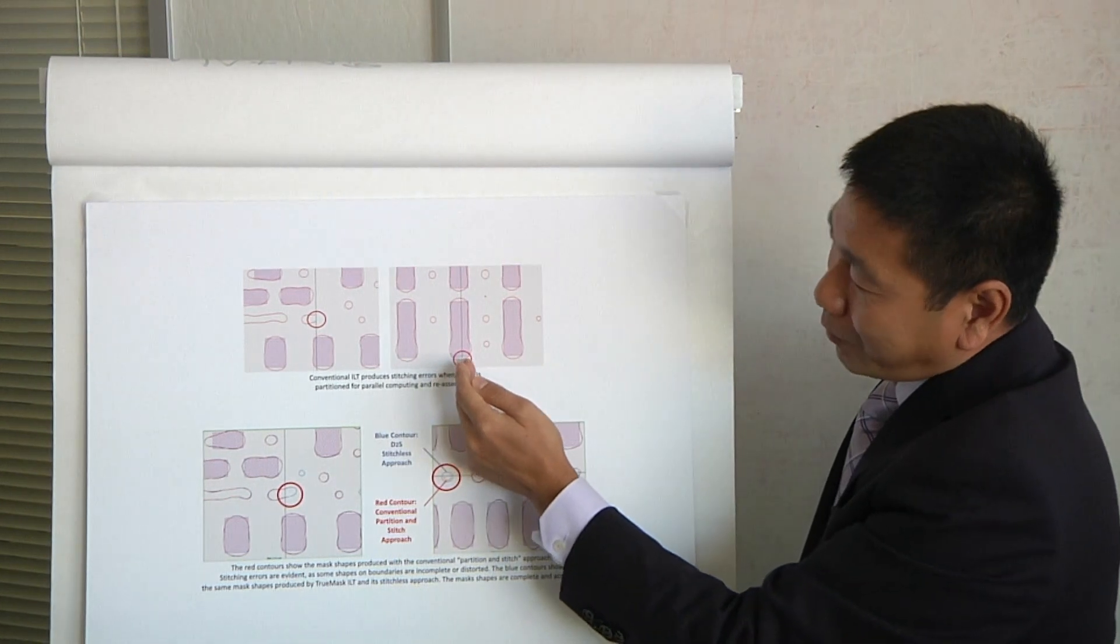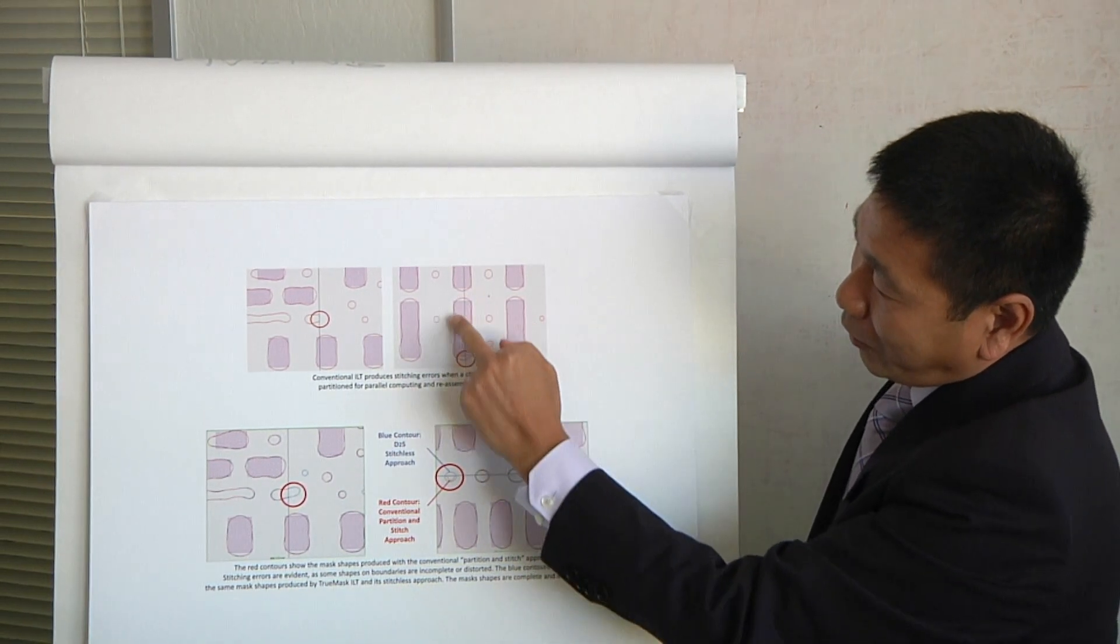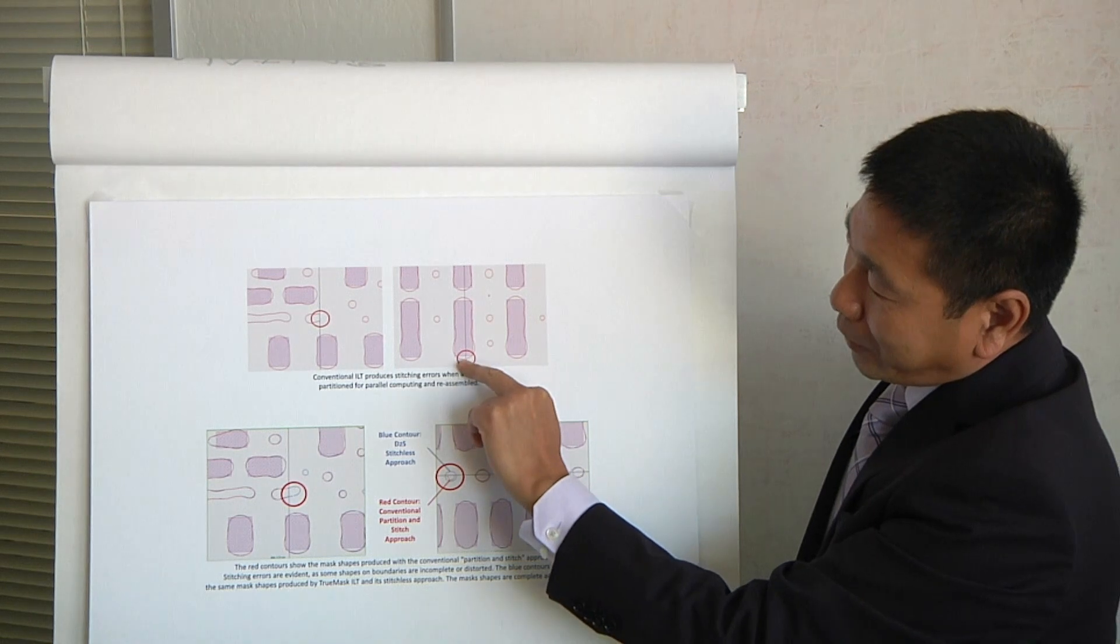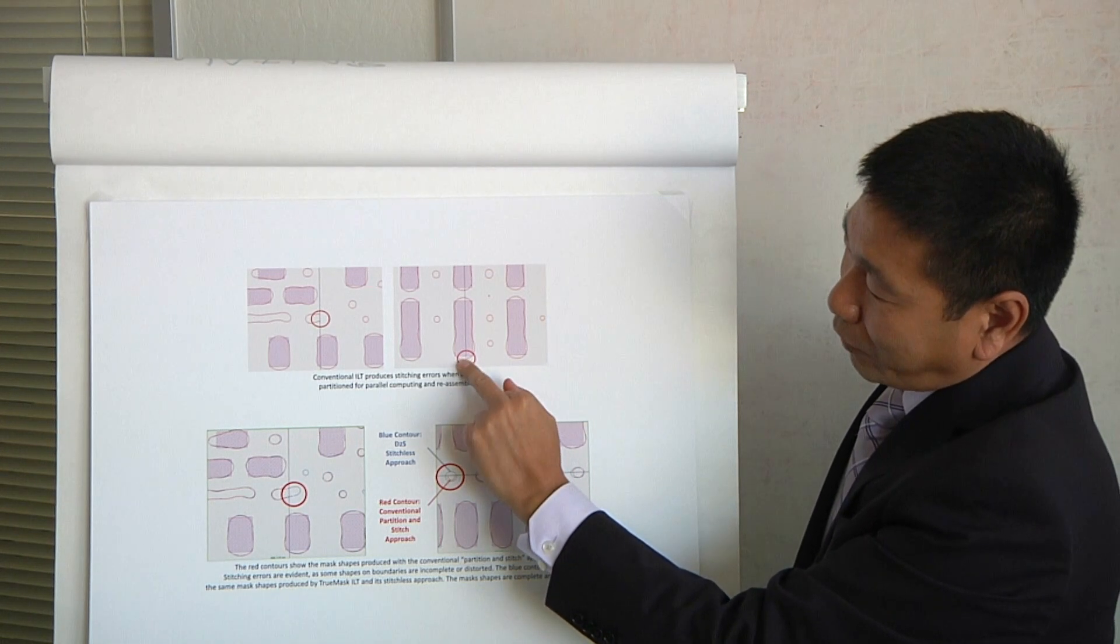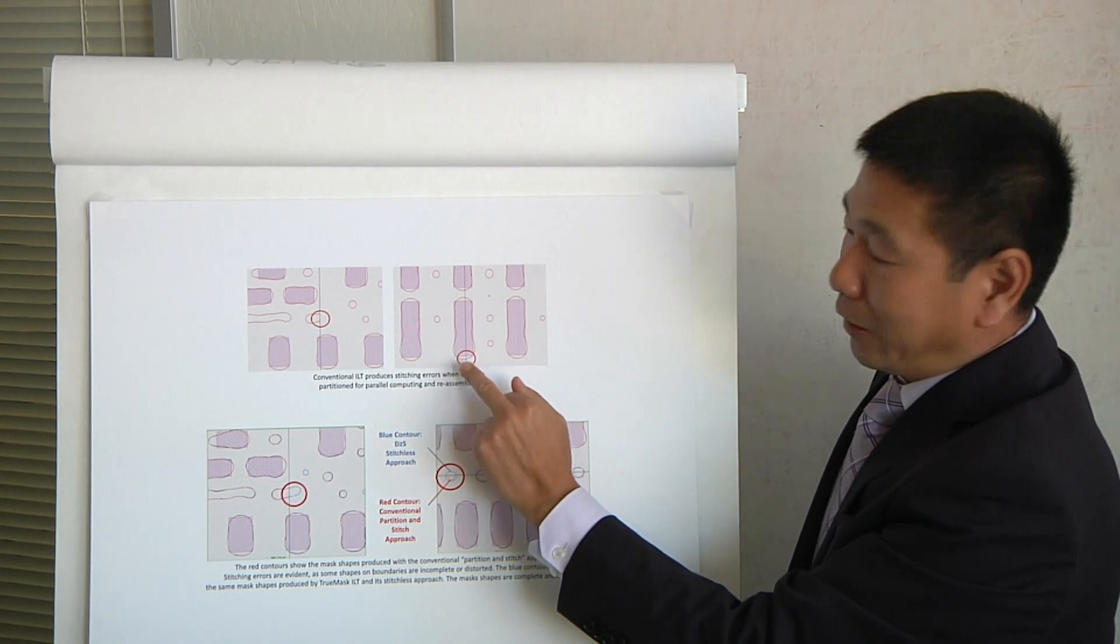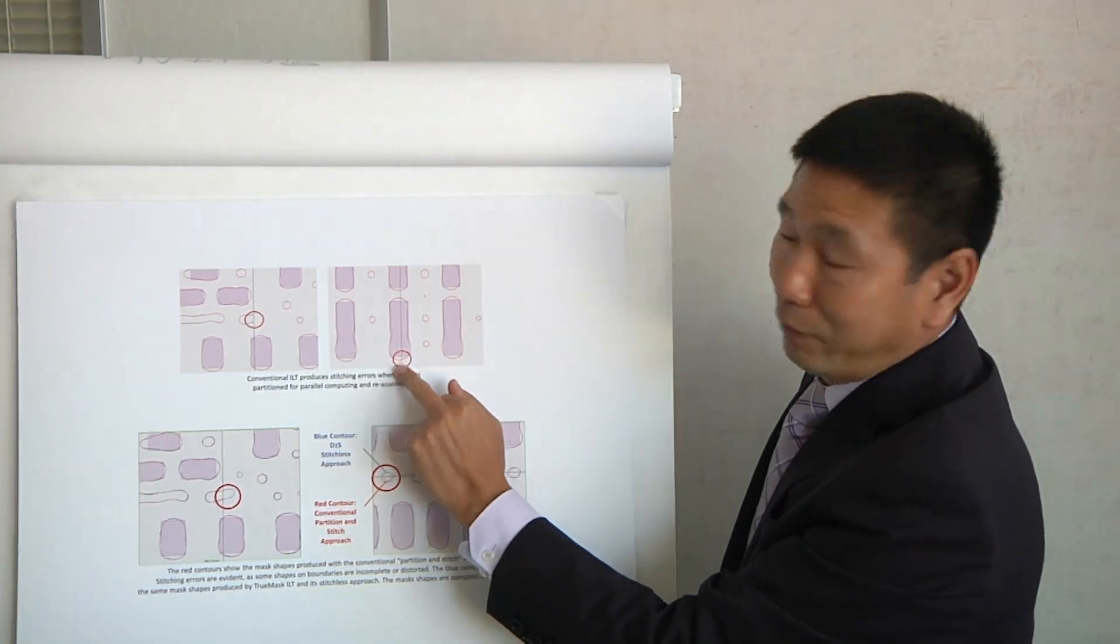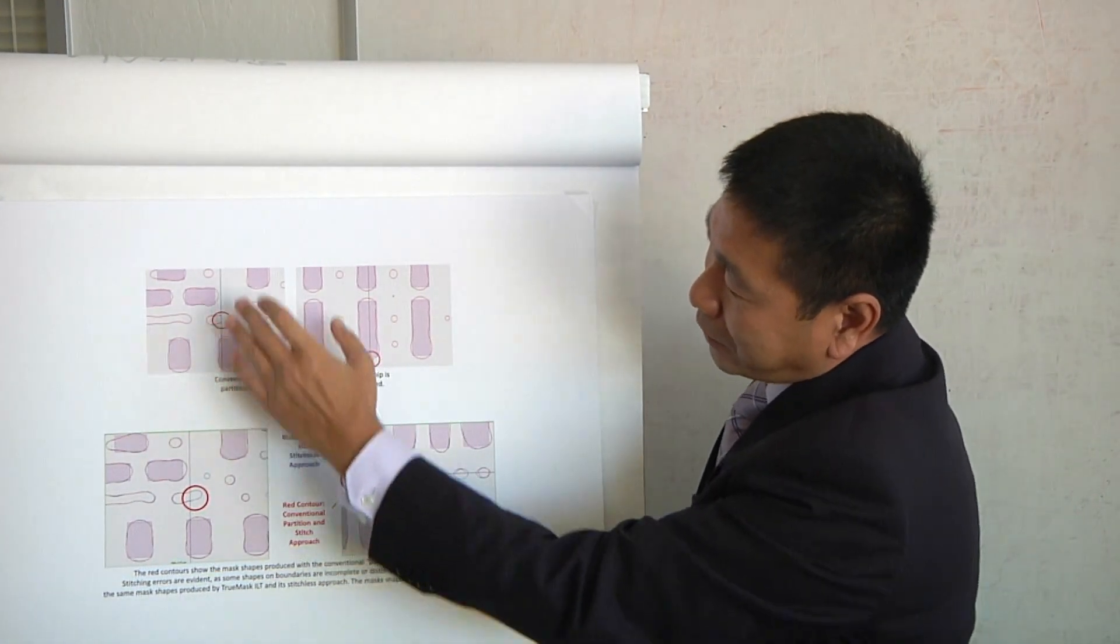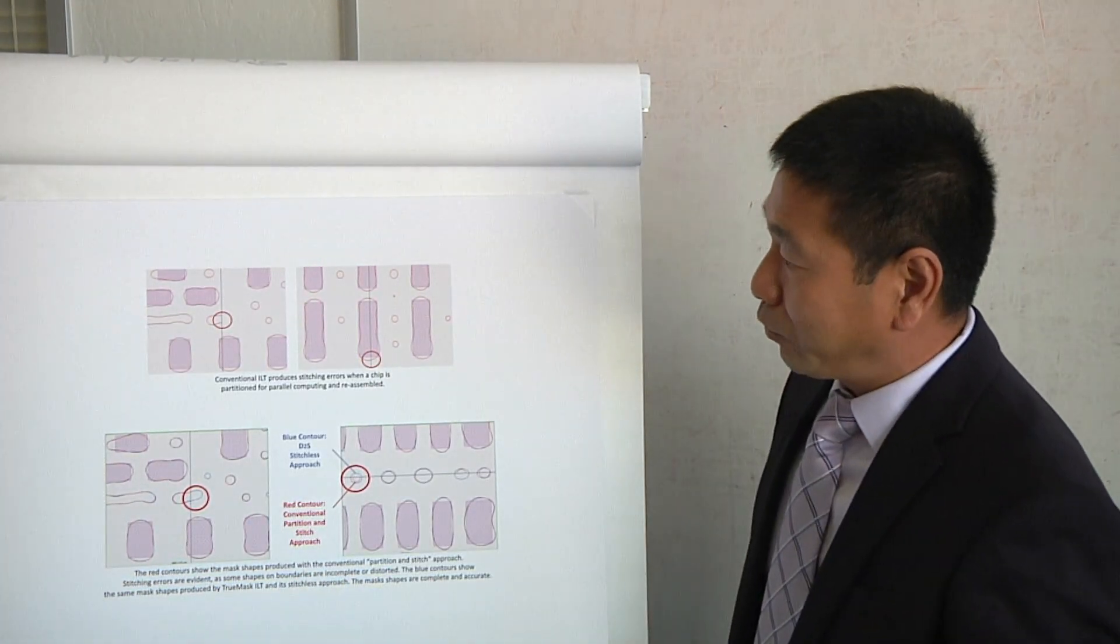Another very common stitch error is like this. You have this main feature, but the ILT solution from the left and from the right, they are slightly different. So you have those shocks. So those are the kind of stitching error you have to fix.